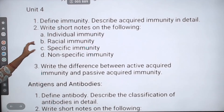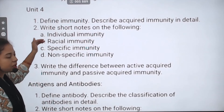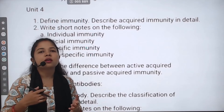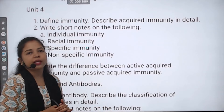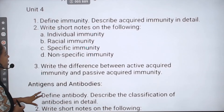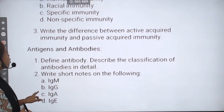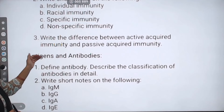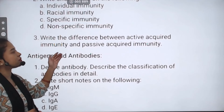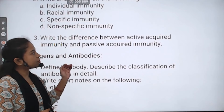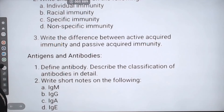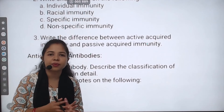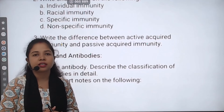The next question: you will probably be asked about specific immunity or non-specific immunity — describe which one you are asked about. Then, write the differences between active acquired immunity and passive acquired immunity. What are the differences between these two — how do you differentiate them?